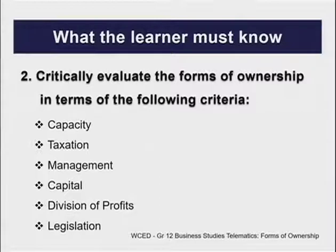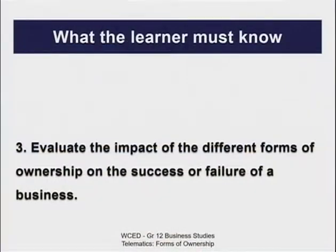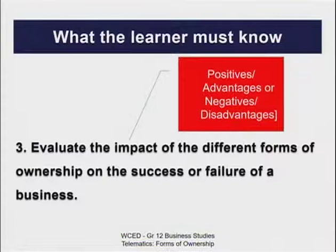Learners must know those criteria, because very often learners don't even know them. We spoke earlier and there's an easy way to remember those criteria — we'll come up with an acronym later. The third thing learners should know is they need to evaluate the impact of the different forms of ownership on the success or failure of a business. Learners should know that when they see the word 'impact,' they need to refer to the positives — the advantages — or the negatives — the disadvantages.